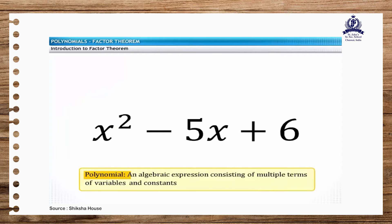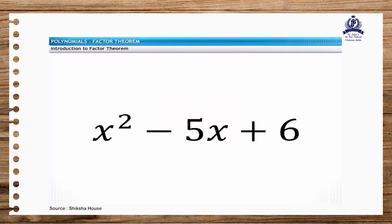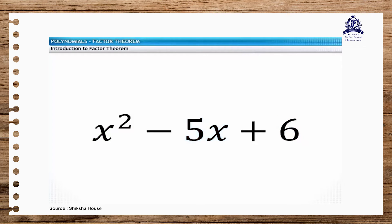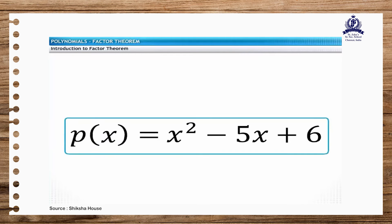A polynomial is an algebraic expression consisting of multiple terms of variables and constants, combined by using mathematical operators: addition, subtraction, and multiplication. The exponents of variables must be whole numbers. A term can be a variable, a constant, or a product of the two. A real number that precedes the variable is called the coefficient. This polynomial in x can be represented as p of x. With the highest degree of x being 2, this is a quadratic polynomial.